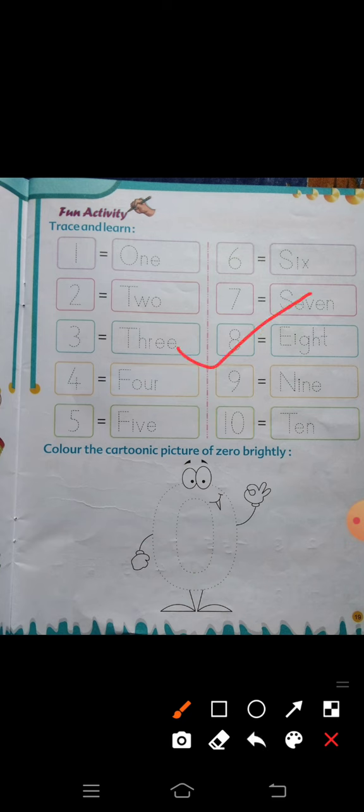This is our activity. O-N-E 1, T-H-R-E-E 3, F-O-U-R 4, F-I-V-E 5, S-I-X 6, S-E-V-E-N 7, E-I-G-H-T 8, N-I-N-E 9, T-E-N 10.